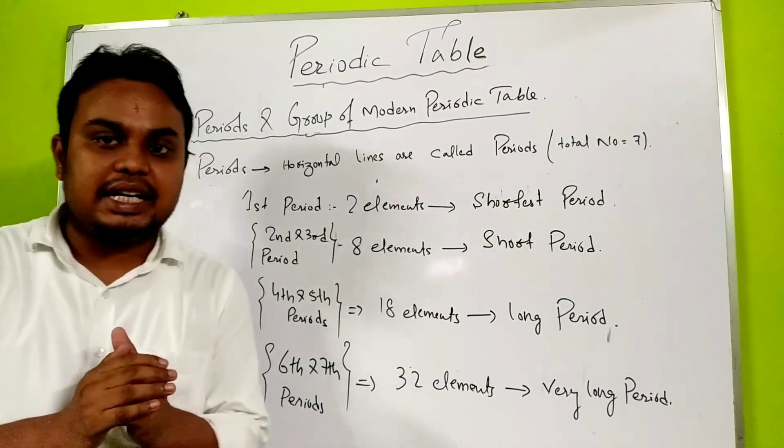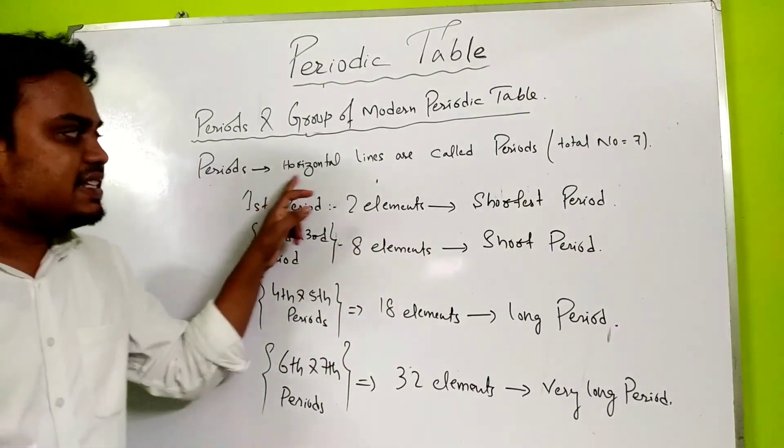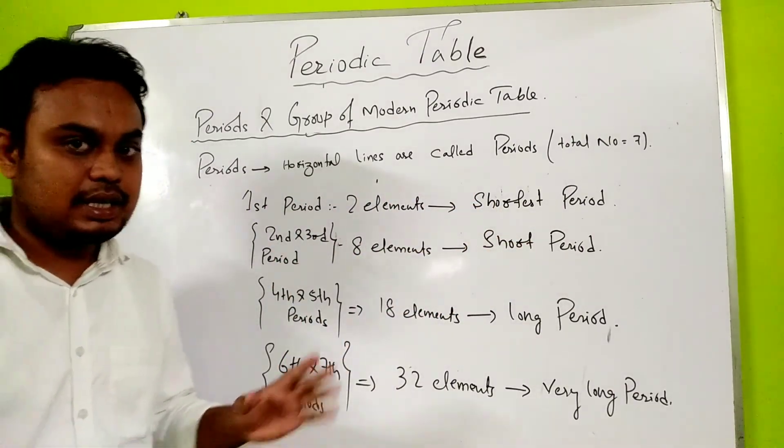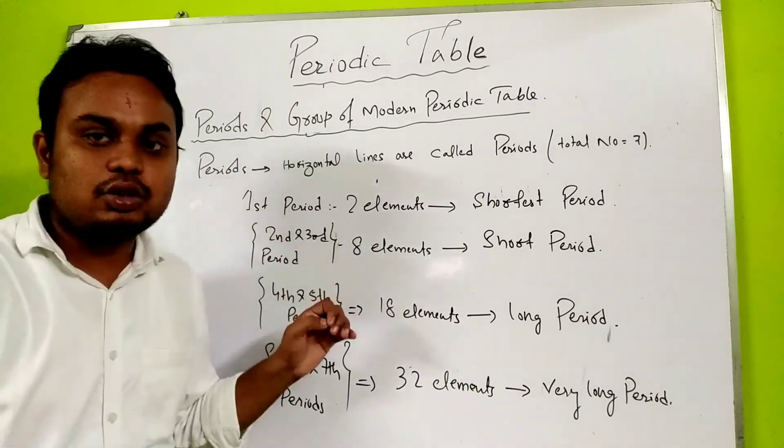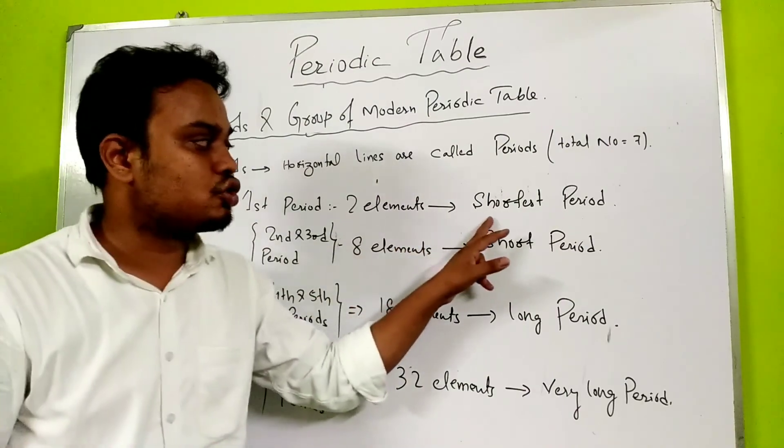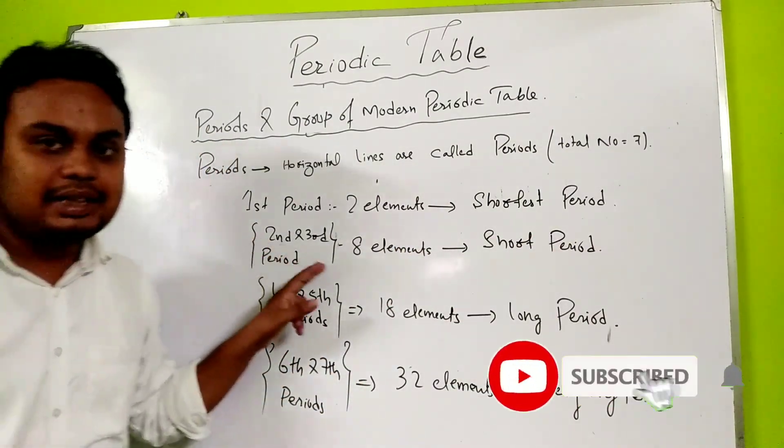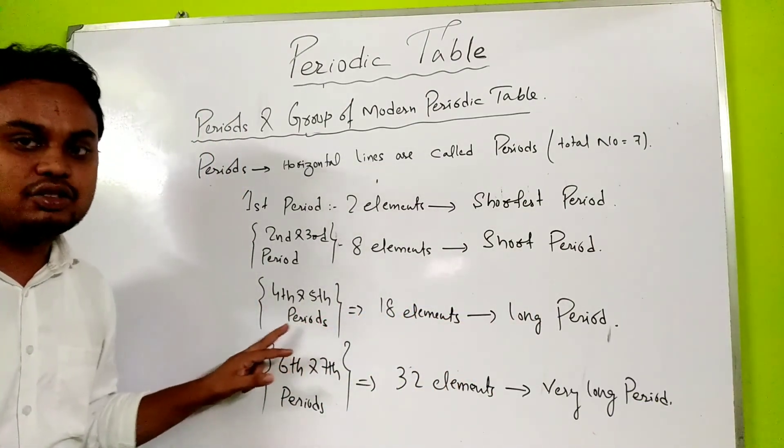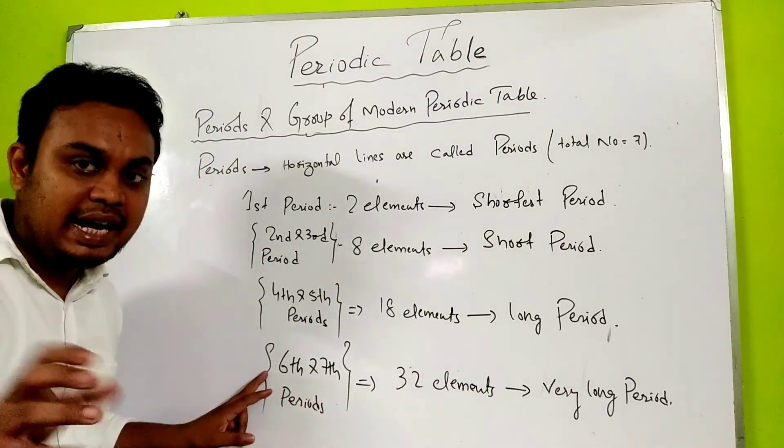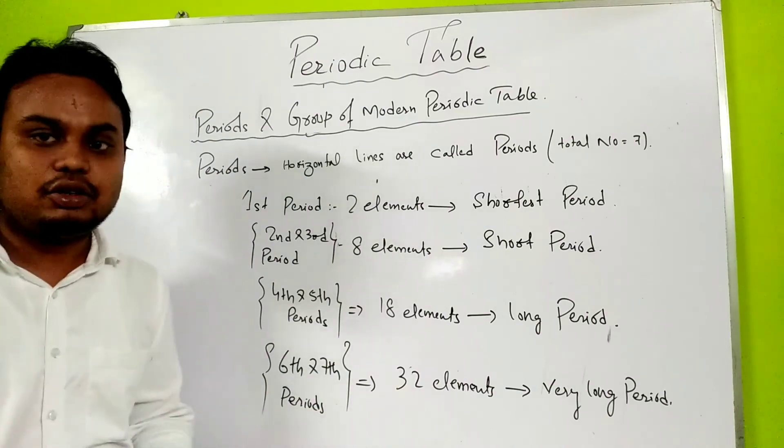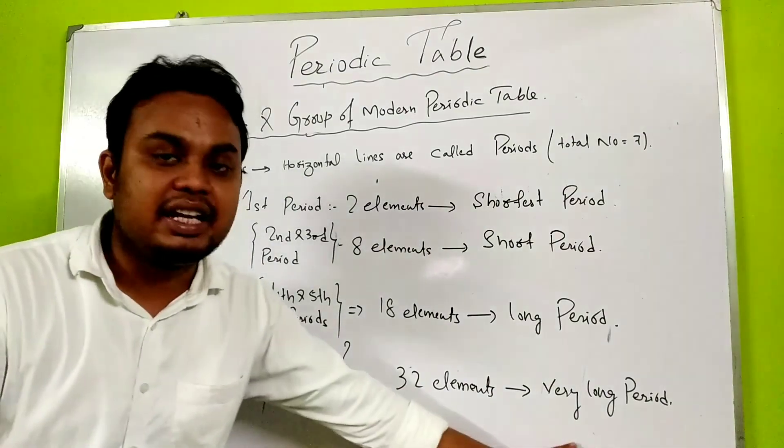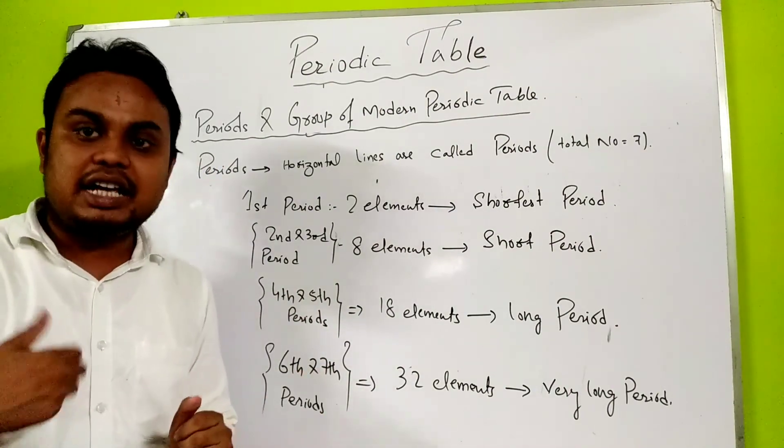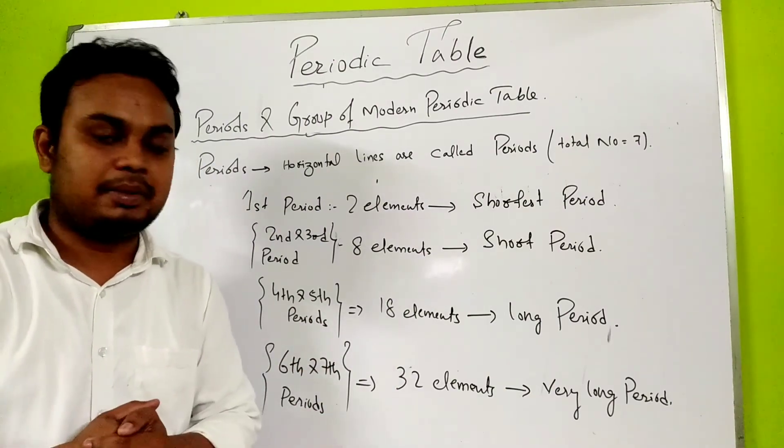Now the periods. Horizontal lines - total number is 7. The first period has two elements, called the shortest period. The second and third periods have 8 elements, called short periods. The fourth and fifth periods have 18 elements, called long periods. Periods 6 and 7 have 32 elements - period 7 is incomplete. We call these very long periods. In this video, we have a full overall idea of the periodic table. In the next video, we'll have more details. Thank you.